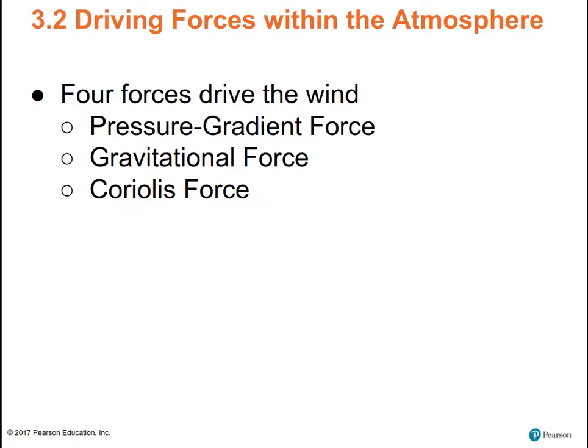Friction slows down wind speed next to the ground and also reduces the effect of Coriolis for wind close to the ground — from the surface up to about 1,500 feet above the ground, or above the highest point at the surface.